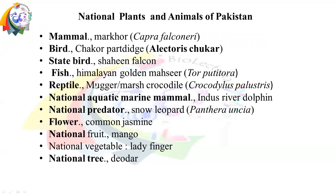Who is the national mammal? Who is the national bird? Who is the national fish? Who is the national reptile? Who is the national aquatic marine mammal? Who is the national predator? What are the national flower, fruit, vegetable, and tree? All these things we will discuss here, one by one.